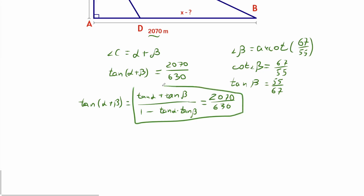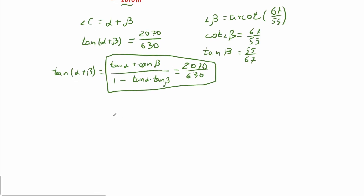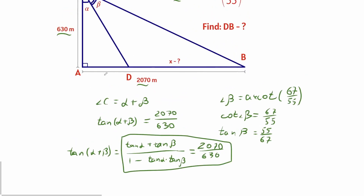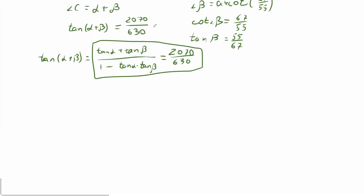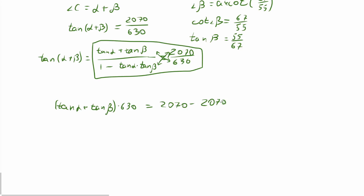Now let's use this equation to find tangent alpha. Once we have tangent alpha we can find the length of AD — let's call it y — and once we know y we can easily find x. So let's do the cross multiplication: tangent alpha plus tangent beta, times 630, equals 2070 minus 2070 times tangent alpha times tangent beta.